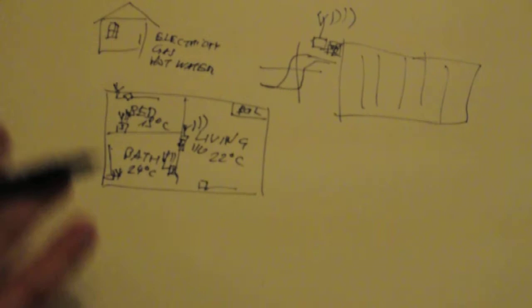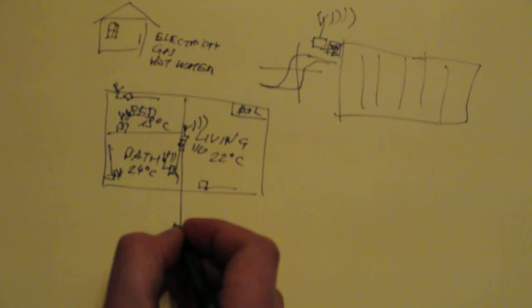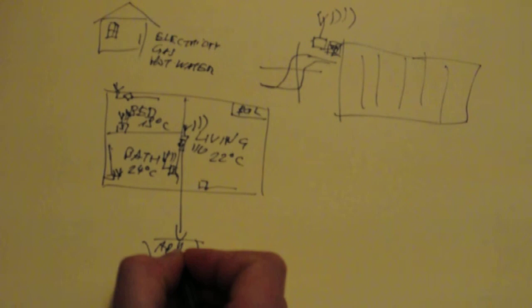Moreover, that system can be connected to the internet and we can have an application that allows us to control the conditions in our home. Plus, this system might use external data to, for example, rely on the weather forecast for setting the temperatures in our home.